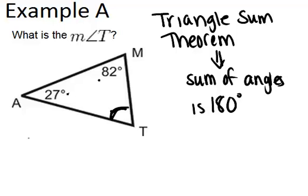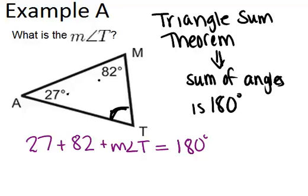So in other words, 27 plus 82 plus the measure of angle T has to equal 180 degrees. Now that we have this equation, we can solve it by subtracting 27 and 82 from both sides. Once we do that, we end up with the measure of angle T equals 71 degrees, because 27 plus 82 plus 71 equals 180.